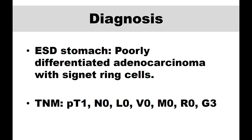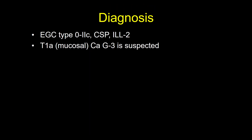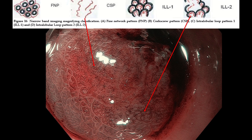This is a really nice case which nicely demonstrates a typical appearance of signet ring cell carcinoma. Usually a well-differentiated adenocarcinoma is divided into protruded type and depressed type, which has the same color as the background or is a little bit reddish. Unlike well-differentiated adenocarcinoma, poorly differentiated adenocarcinoma is usually very flat or depressed and looks whitish. So finding a white patch is a kind of sign of signet ring cell carcinoma.